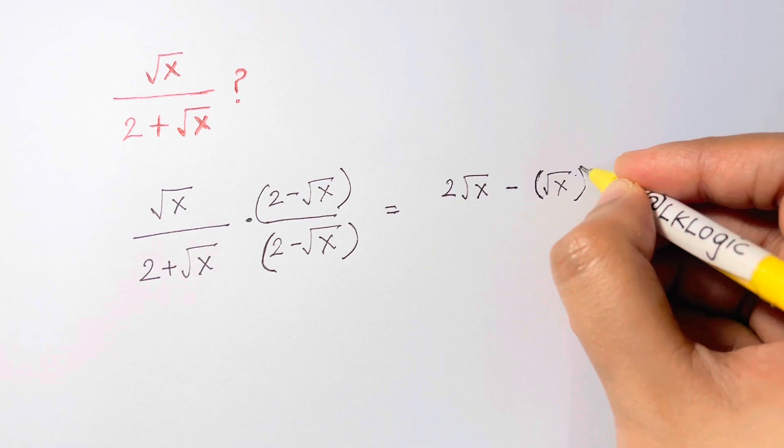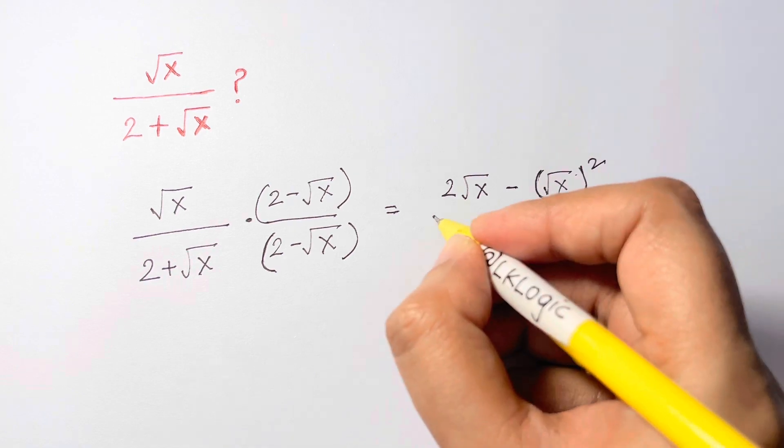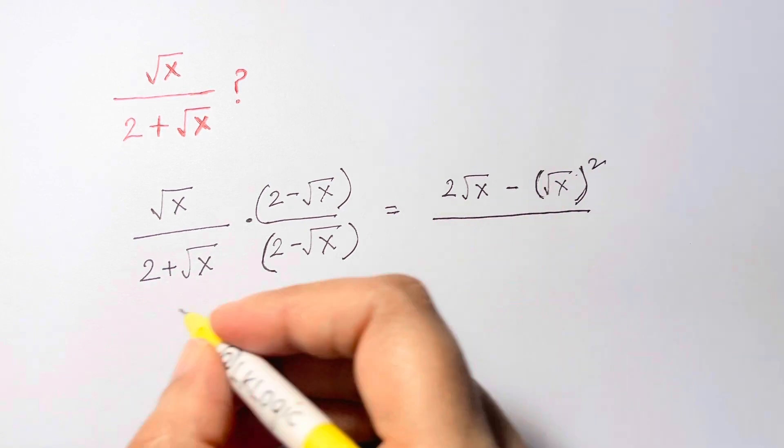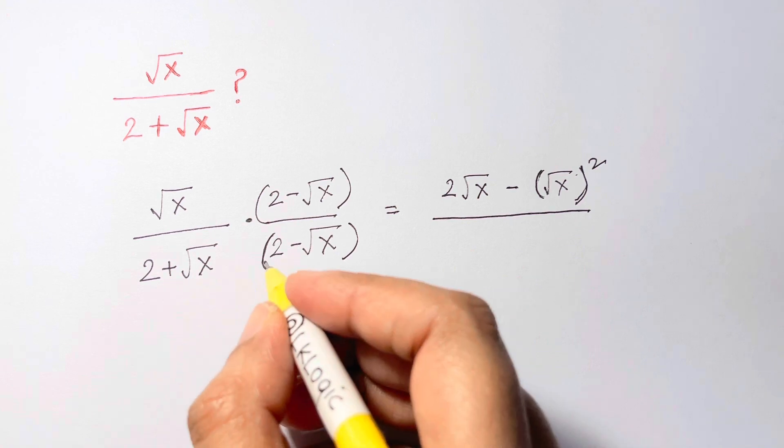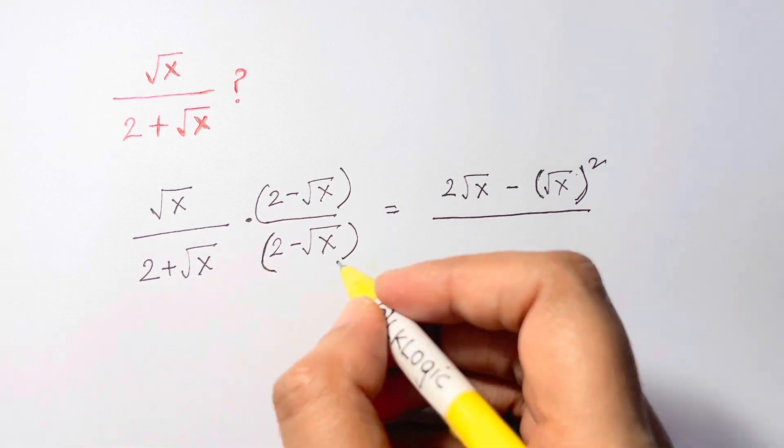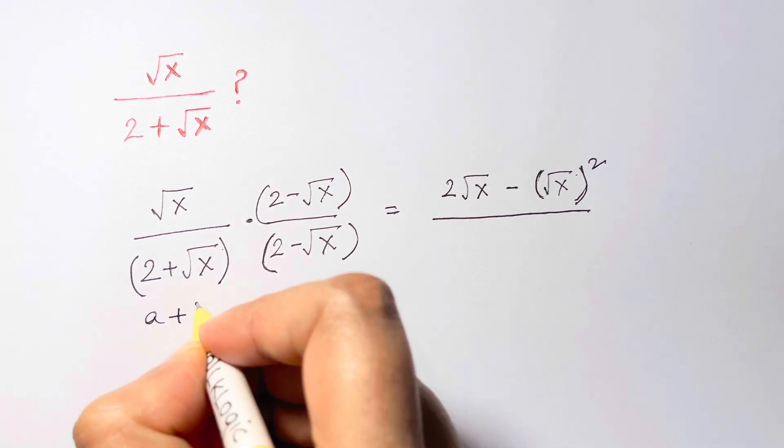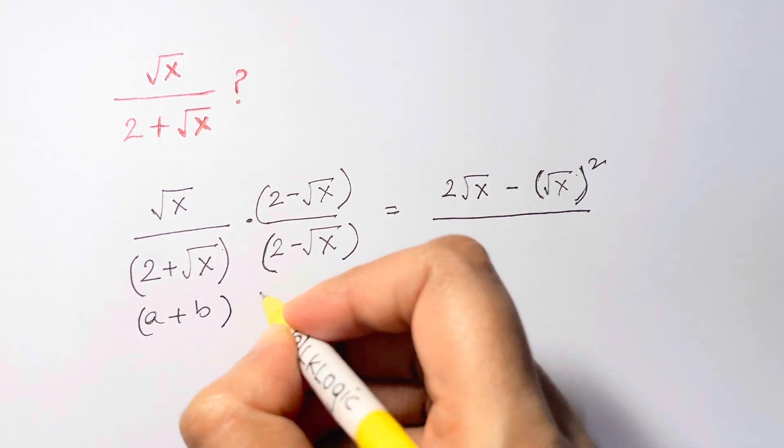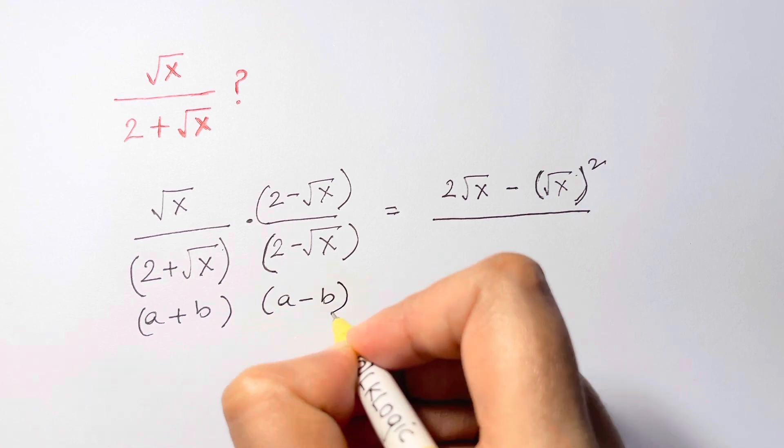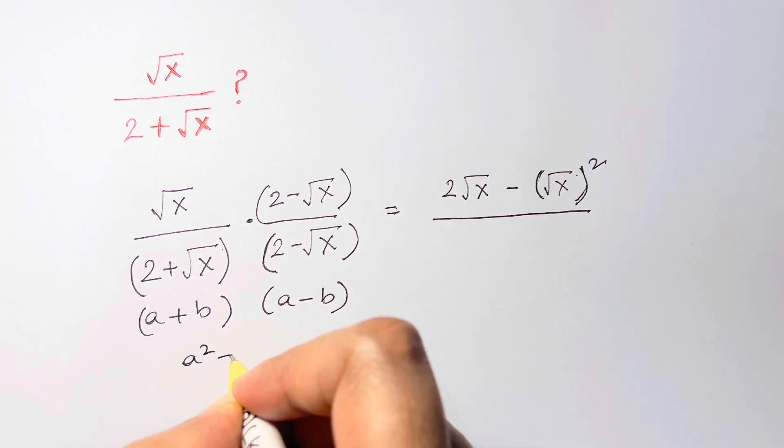Now we have 2 plus root x times 2 minus root x. Now this is in the form of an identity: this is a plus b and this is a minus b. And what's that? A square minus b square.